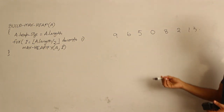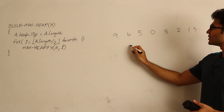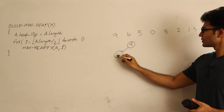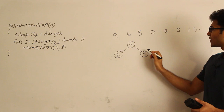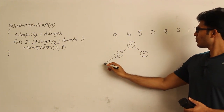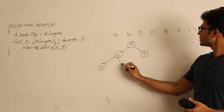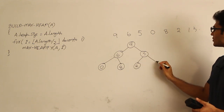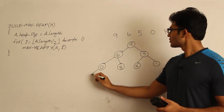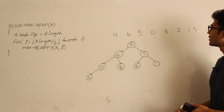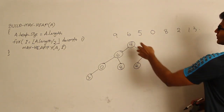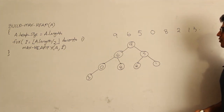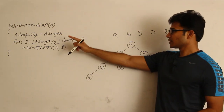Now just see what is the complete binary tree representation of this. If I try to write it in the form of an almost complete binary tree, we are going to get this. One, two, three, four — eight elements total.